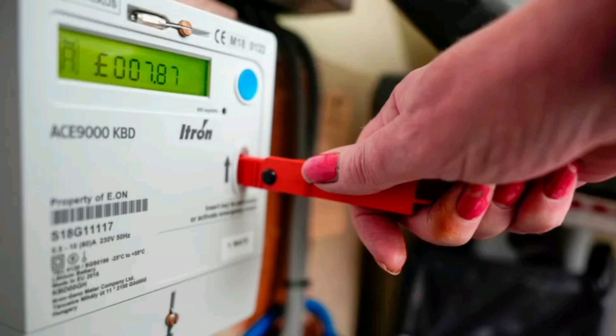After the Times newspaper revealed the practices of British Gas, Ofgem issued a temporary ban on all forceful installations.